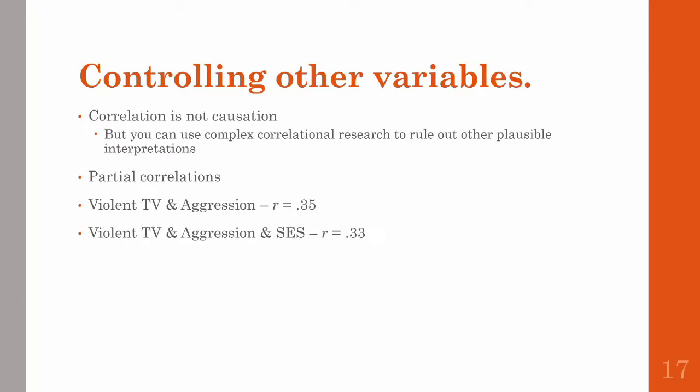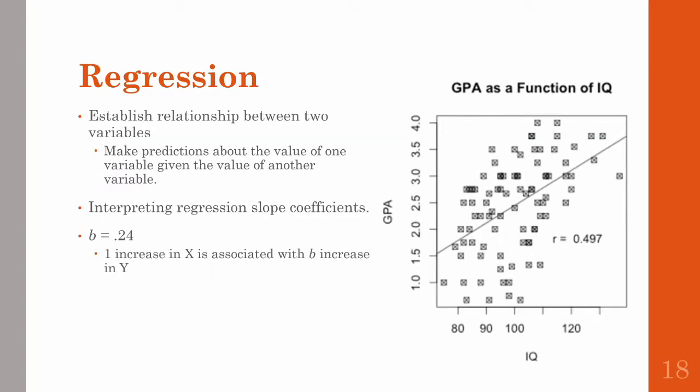Once you establish the relationship between two variables, you can use this to make predictions — this is the idea behind regression. Given one value, you can guess the value on another variable. The variable used to make the prediction is often referred to as the predictor variable.